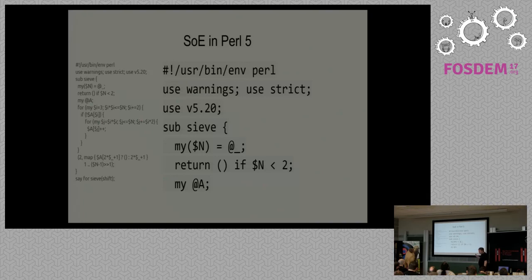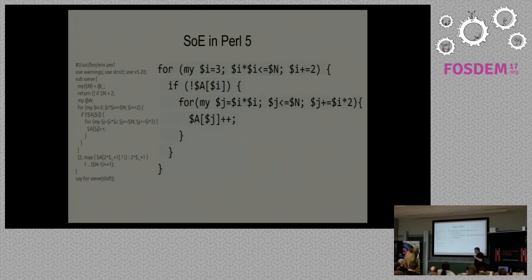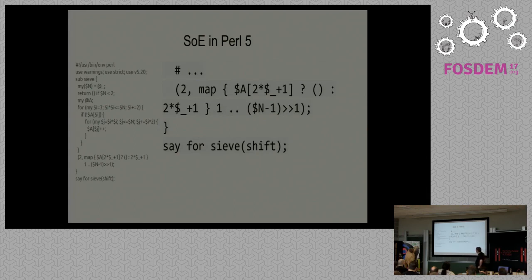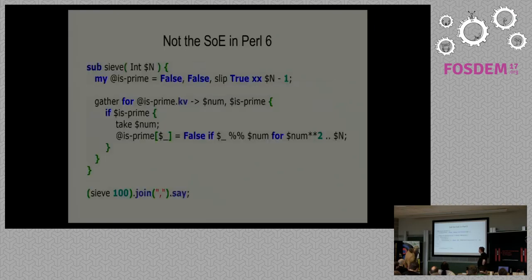In Perl 5, I've done an additional optimization of only going through the odds — after 2, we know we don't have to deal with even numbers at all, so we just ignore them. This is not very Perl-y code, but it is exactly the same as the C code or the Wikipedia pseudocode. There's a bit of wonkiness at the end doing a map and grep to turn the odds back into the numbers we care about. This uses half the memory.